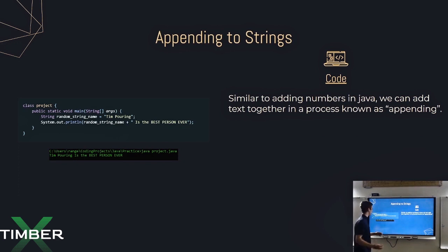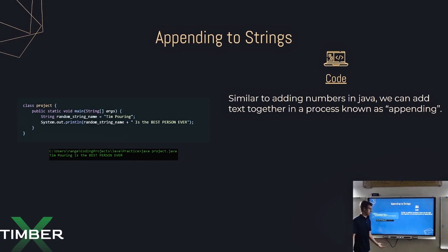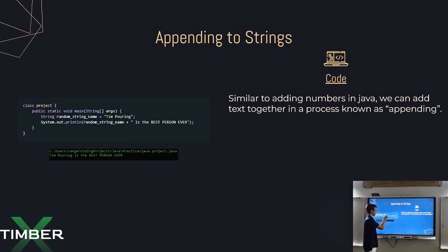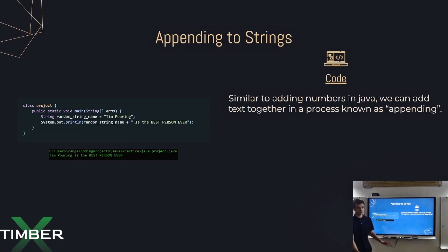So how about appending a string? Say we have a string and we want to add more data to it — we're able to do that using just a plus sign, similar to a mathematical function. So say we define the string with the variable name random_string_name, set it equal to "Temporing", and then we want to append " is the best person ever" to the end. Once we print it, it's going to print "Temporing is the best person ever" — it's just appending these two strings together.